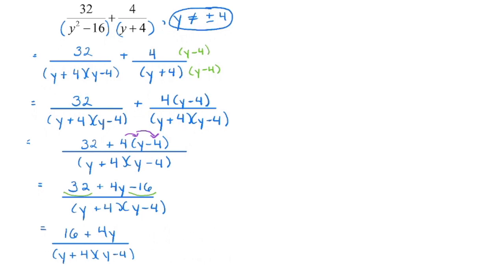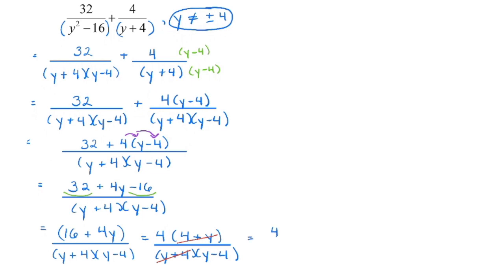Once you've combined your like terms and gotten to this step, now we go to simplify. Is there a common factor we can divide out of the numerator? Re-bracket the numerator and we can see that we can pull out a 4. At this stage, 4 plus y is going to divide out with y plus 4 — those are the same sign, same number, so those cancel. We end up with 4 divided by y minus 4. That is our final solution.